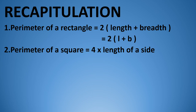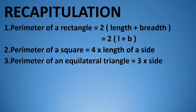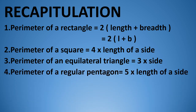Third, perimeter of an equilateral triangle — means a triangle whose all 3 sides are equal — its perimeter is 3 multiplied by side. Fourth, perimeter of a regular pentagon. A regular pentagon has 5 equal sides, so its perimeter is 5 multiplied by length of a side.